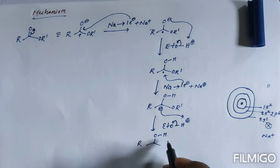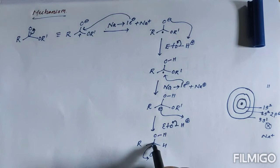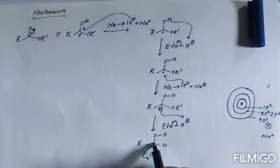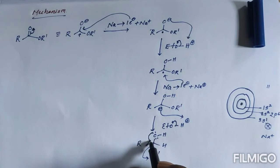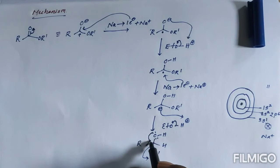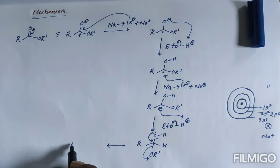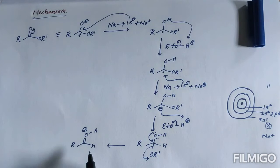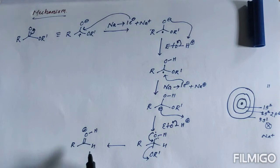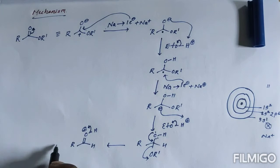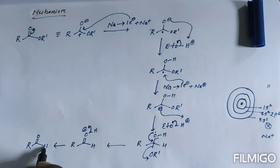The alkoxide is a better leaving group, so it departs, generating a positive charge at the carbon. This positive charge is stabilized by double bond formation between oxygen and carbon using oxygen's lone pair electrons. The resulting structure has oxygen with a positive charge, which is unstable, so oxygen pulls the sigma bond electrons and releases a proton, giving us an aldehyde intermediate.